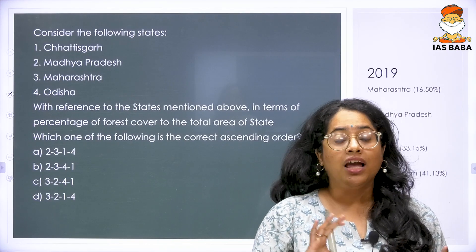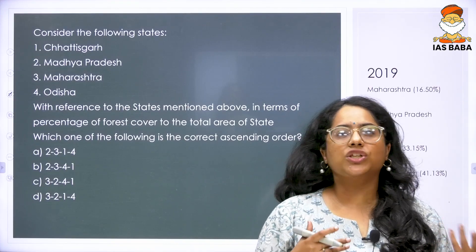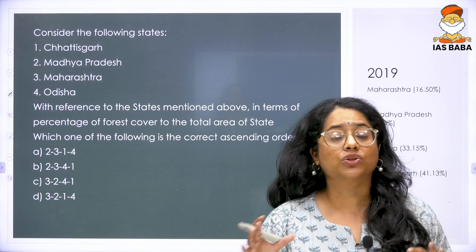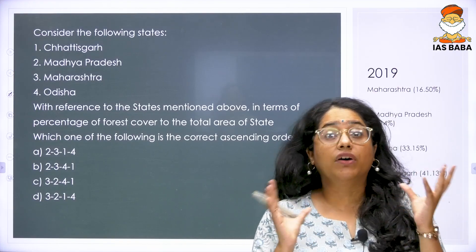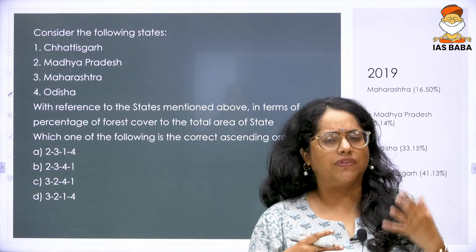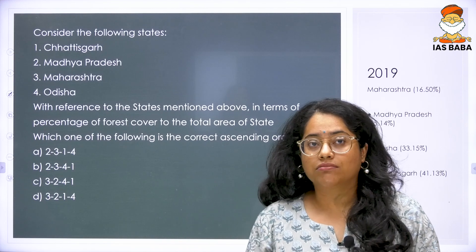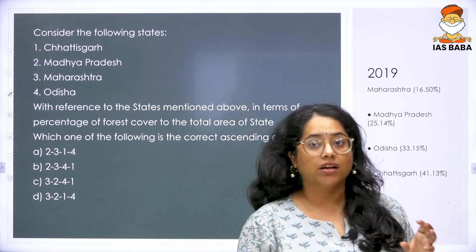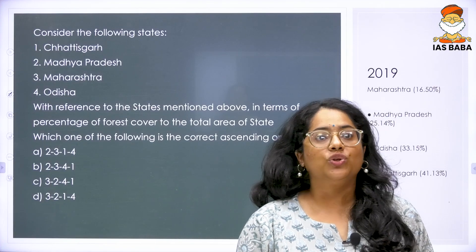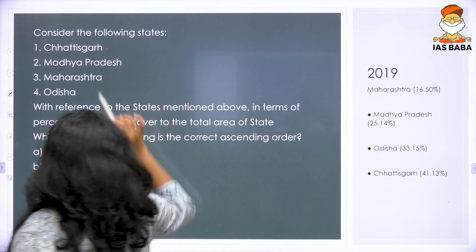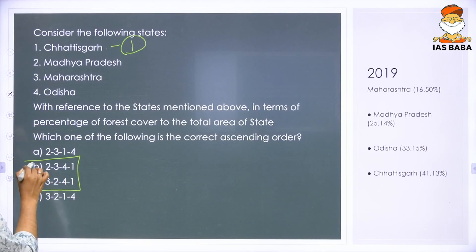Maharashtra is much more industrialized. When you come to Odisha and Chhattisgarh — Chhattisgarh is one area where very less development is happening. Which is more likely to be covered with forest — an area which is very developed, or an area which is not very much developed? An area which is not much developed. Out of all of these, Chhattisgarh fits that bill. Almost 41% of Chhattisgarh is actually forest area. So in ascending order, Chhattisgarh would come last, and you are looking for an option where Chhattisgarh is last.